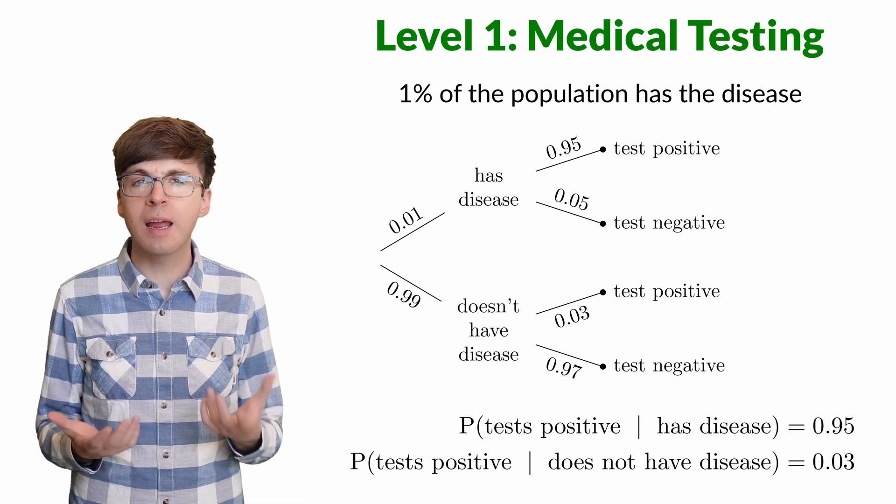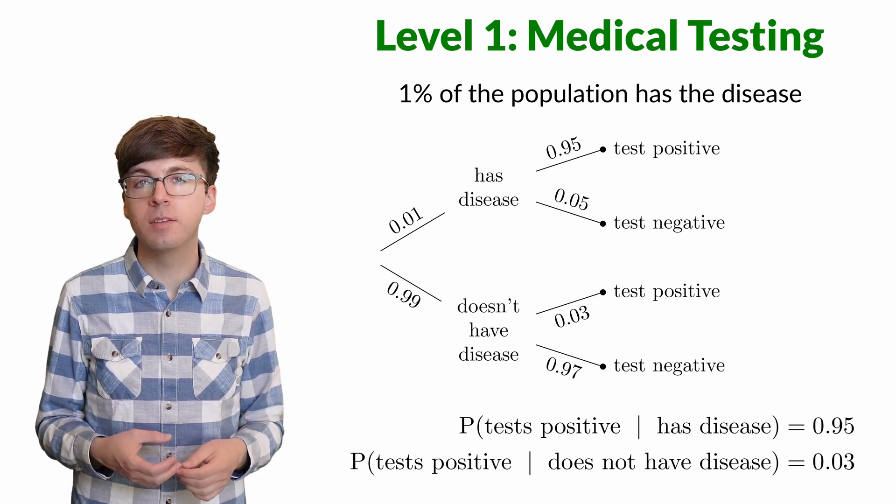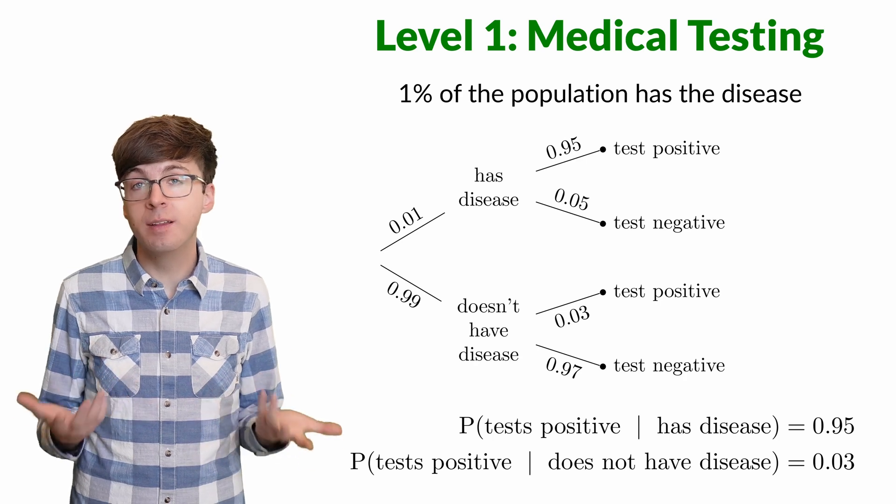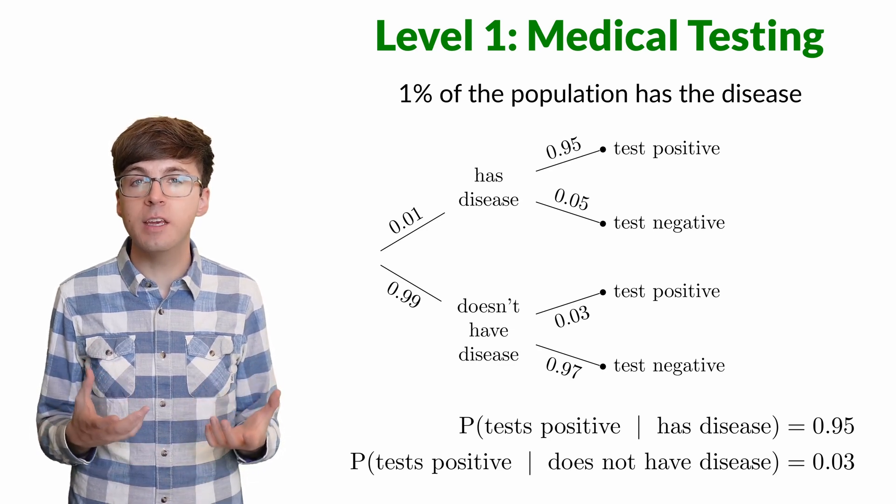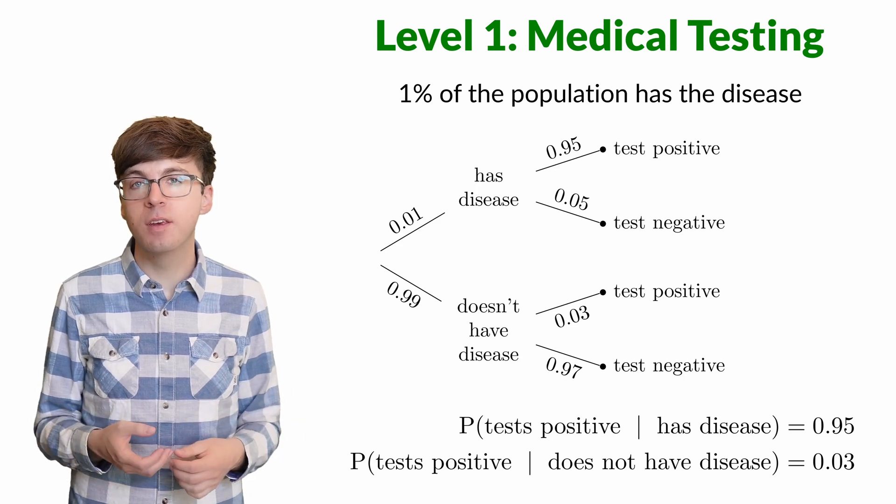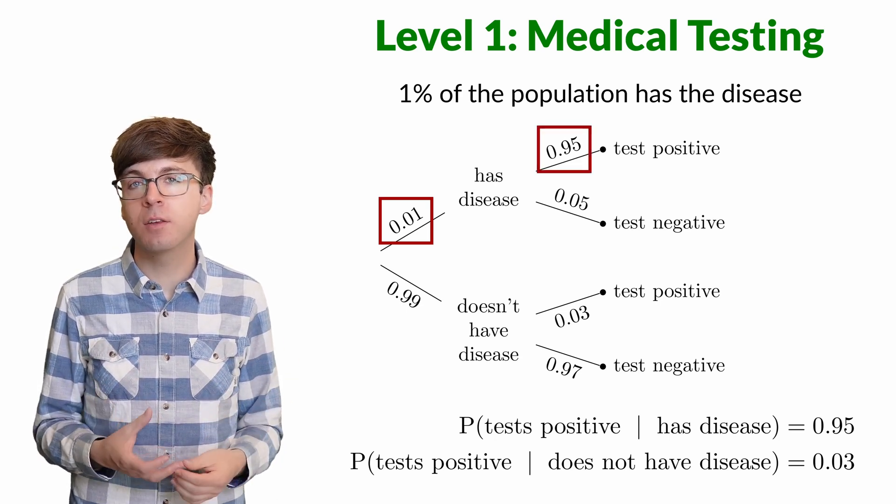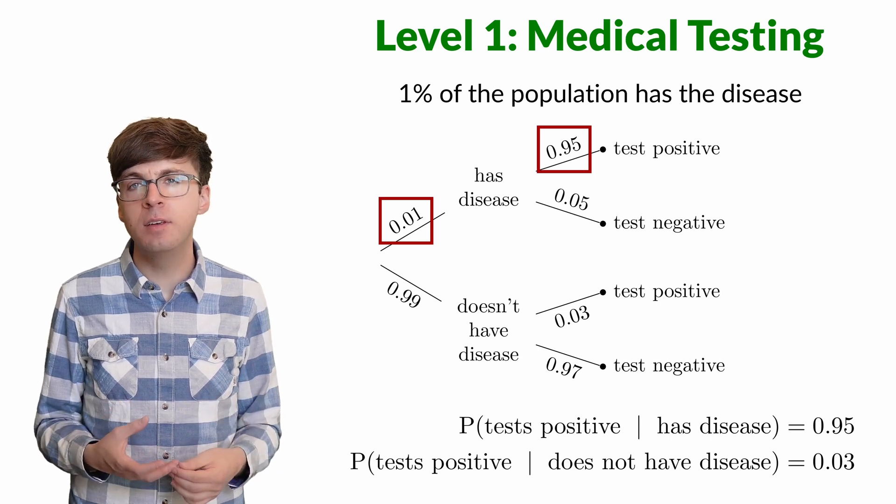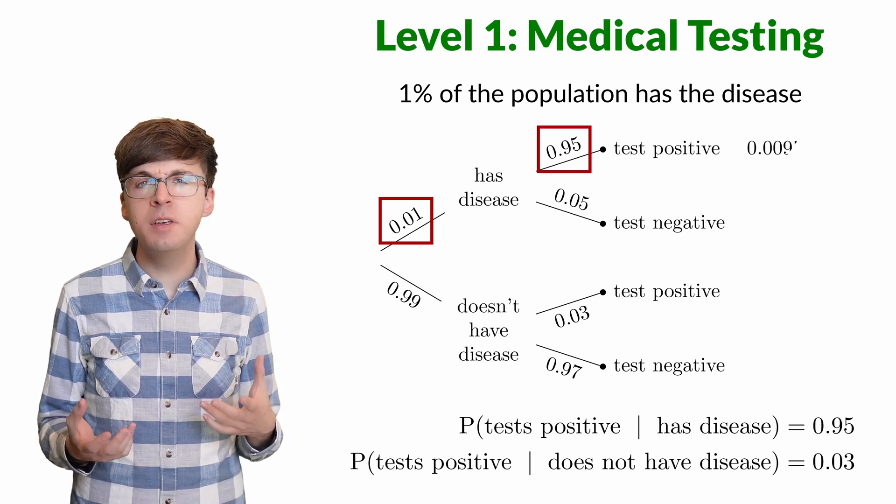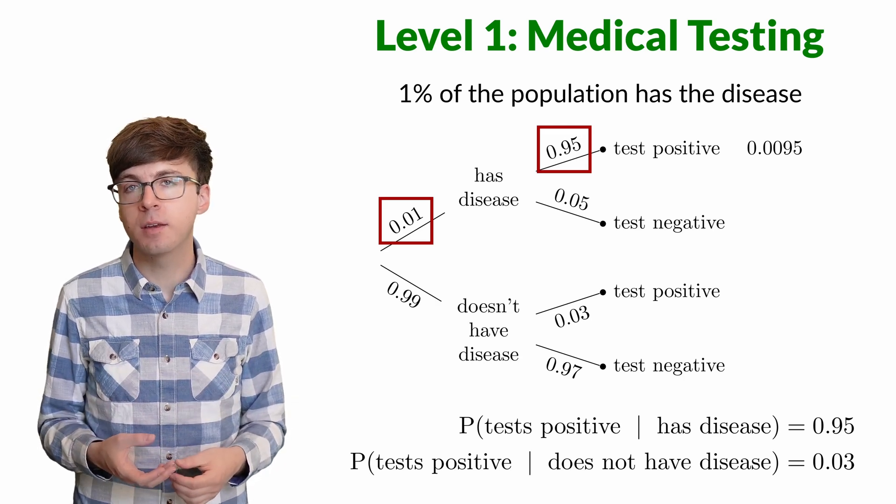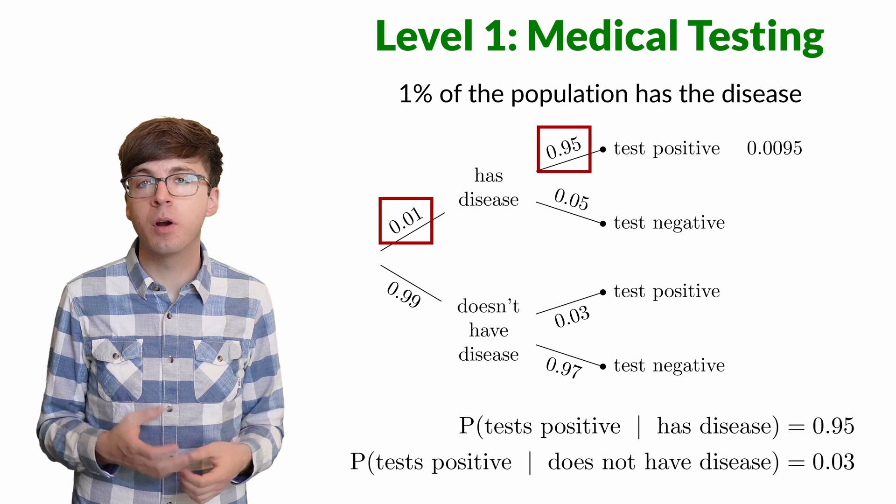So the test is administered to a randomly selected individual from the population, and the test is positive. It says the person has the disease. What's the probability this individual really does have the disease? This probability tree illustrates these events. We can find the probabilities for each of the four groups by multiplying the values along the branches. For example, 1% of individuals have the disease, and out of those, 95% will have a positive test result. This is the probability of having the disease times the conditional probability of testing positive given having the disease. This probability is 0.0095 or 0.95%.